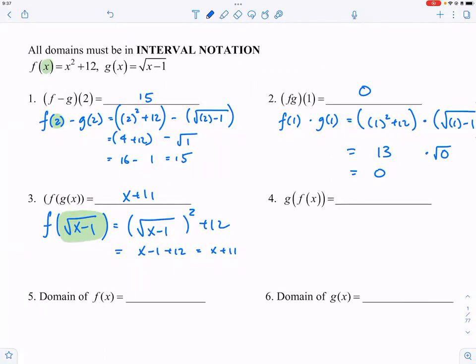G of F of X is, well, G of what? Well, F of X is equal to X squared plus twelve. So we replace F of X with X squared plus twelve because that's what F of X is.